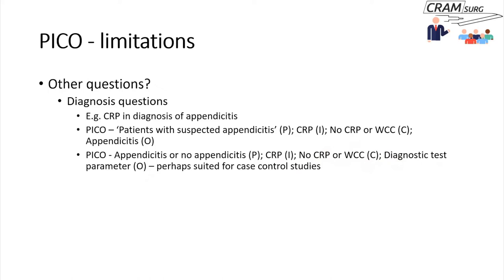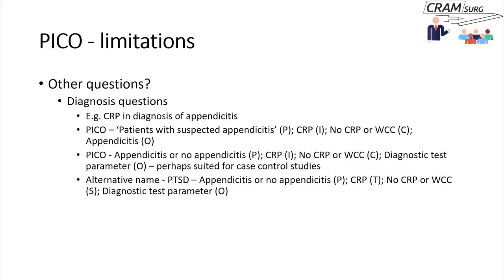It's a slightly artificial situation, but this is another way of using the PICO framework. People have suggested an alternative term — the PTSD framework: P is the population, T is the test (which is CRP here), S is the standard (which is probably the white cell count), and D is the diagnostic test parameter. So just in case you come across the PTSD framework for diagnostic studies, you have heard it before.